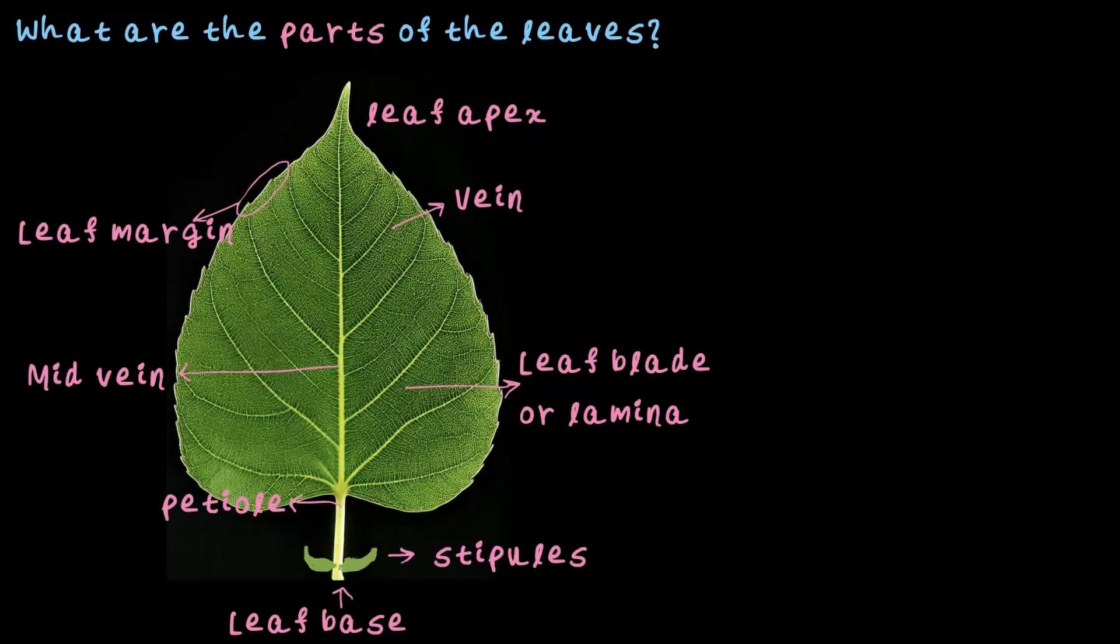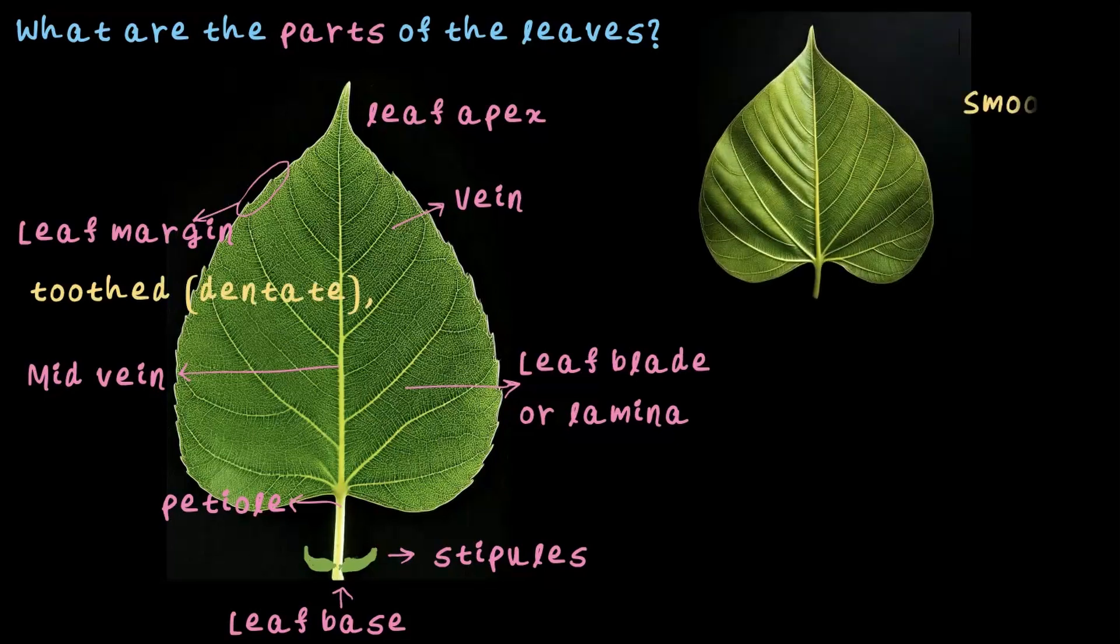These are the parts of a leaf that you might not have noticed before, but now you will definitely start paying attention to them. You can see the margin here is tooth-shaped or it's called a dentate margin. There are different types of leaf margin as well. The one you see here is a smooth margin. The entirety of the leaf margin is smooth, unlike the first one on the left side which is toothed.